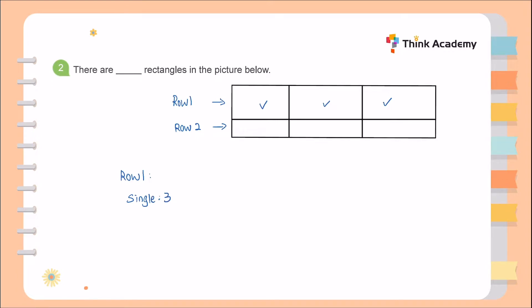Two adjacent single rectangles can form a bigger double rectangle, giving us 2 double rectangles in row 1. Three single rectangles can also form one large triple rectangle, giving 1 triple rectangle in row 1.